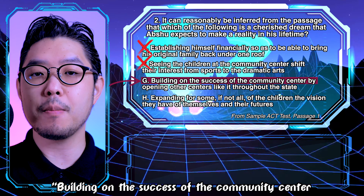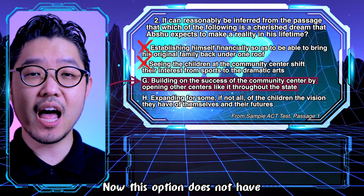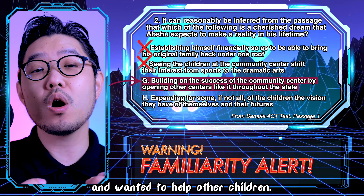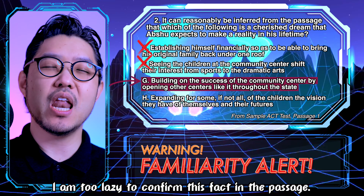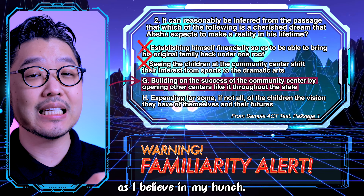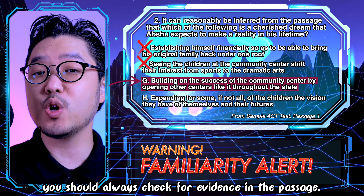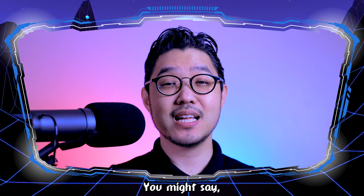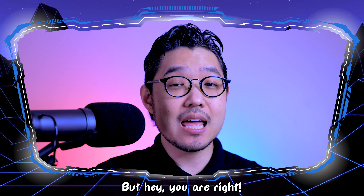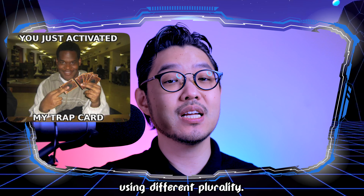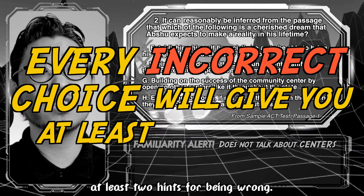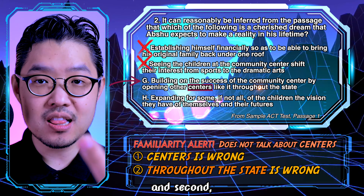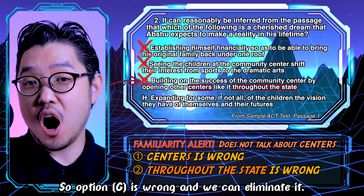Option G reads: 'building on the success of the community center by opening other centers like it throughout the state.' This option doesn't have a word-by-word representation in the passage, but it appeals to familiarity as well. The main character had a noble goal and wanted to help children, so it sounds good — but you should always check for evidence in the passage. Nowhere in the whole passage does it talk about multiple centers; it only mentions one center that Apshu was involved in. Every incorrect choice will give you at least two hints for being wrong: first, the plurality of 'centers' is wrong; second, the scale of 'throughout the state' is not mentioned in the passage at all. So option G is wrong and we can eliminate it.